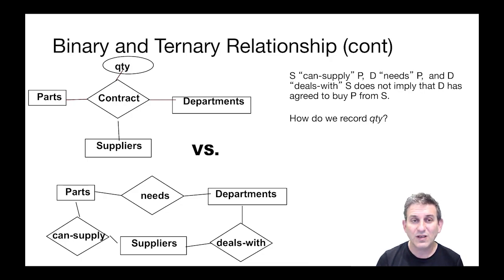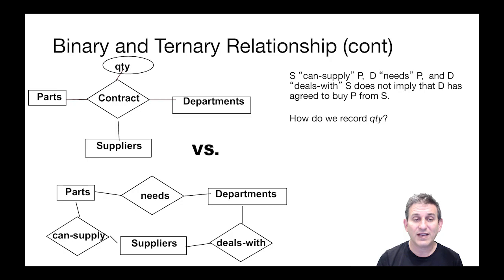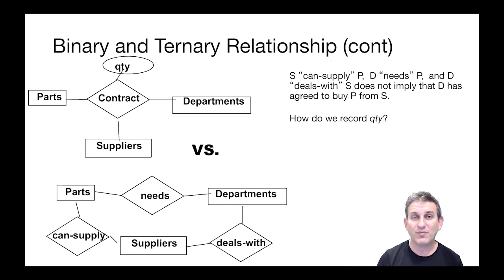There's also no obvious place to record quantity in the lower ER diagram. The quantity is not about how much the department needs, nor how much the supplier can supply, and certainly not about how often the department deals with the supplier. So it's not clear where we would store the quantity of parts actually in the contract. These multiple binary relationships really don't capture the same information as the ternary relationship above. We need the expressive power of both binary and ternary relationships to say all the things we might want to say, and we'll have to think carefully about which we need and when.